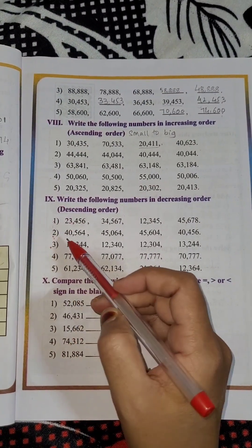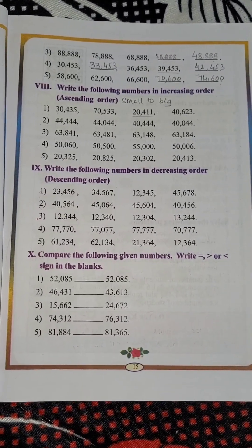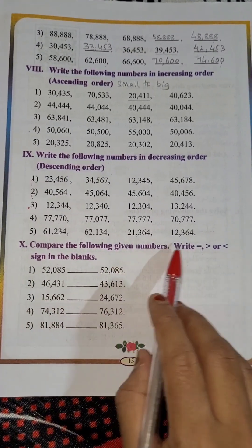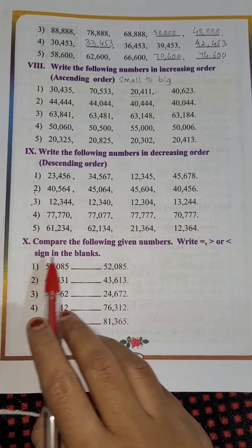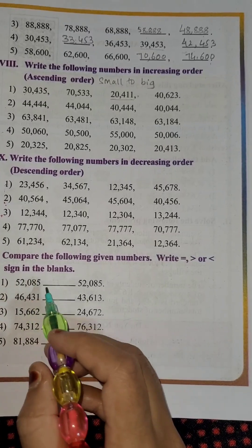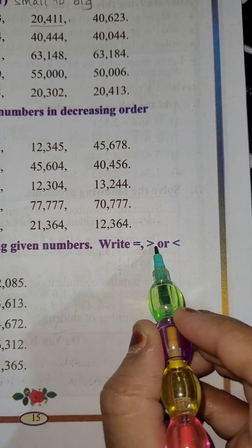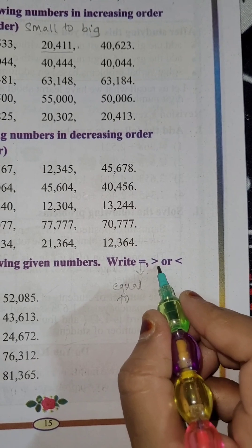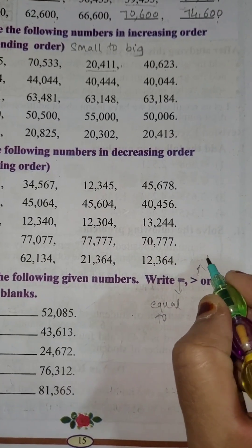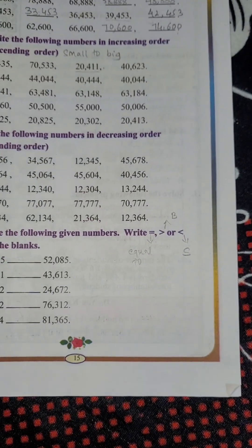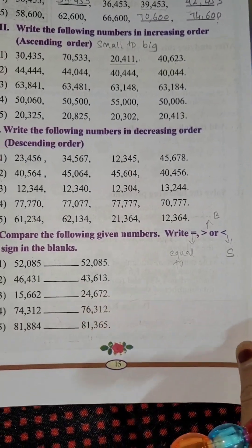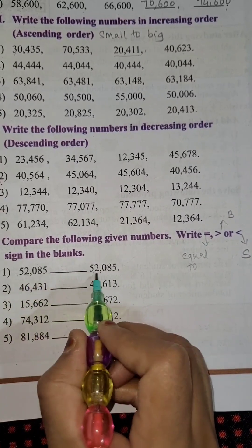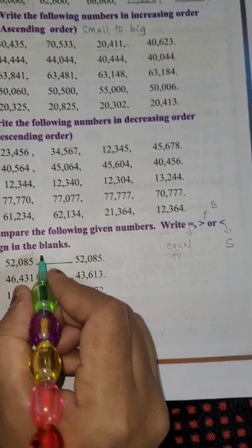Children, in this class we have solved all the problems from the 9th main. Now we will go to the last main — that is, compare the following given numbers. You have to write equal to, greater than, or less than sign in the blanks. Before putting any sign, we should know what these symbols are: equal to, bigger than, and smaller than. First one: 52,085 and 52,085 — they are both the same, so we put the equal to sign.